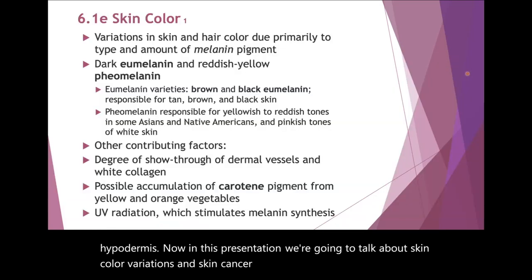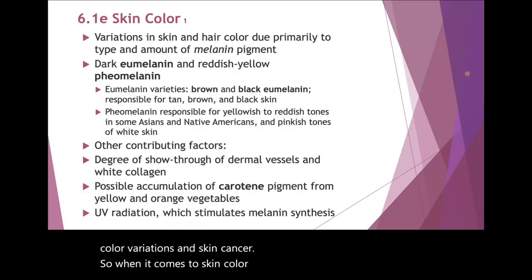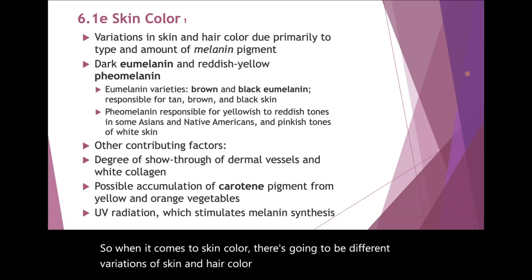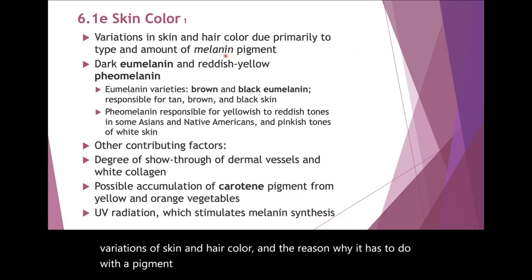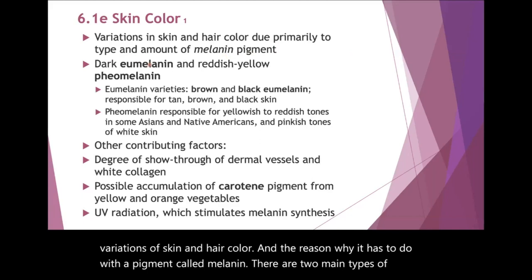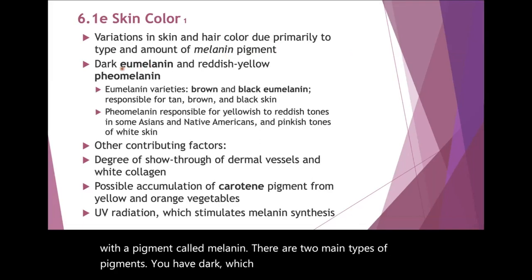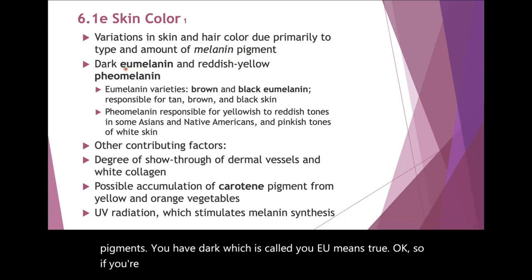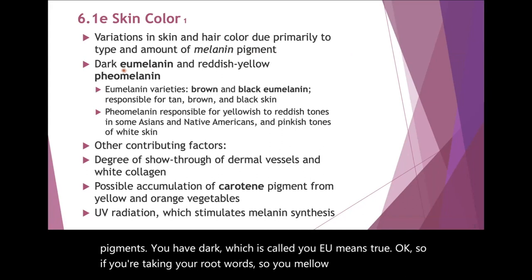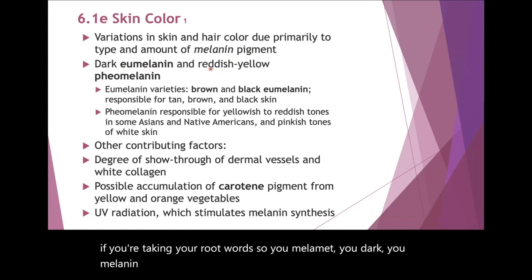When it comes to skin color, there are going to be different variations of skin and hair color, and the reason why has to do with a pigment called melanin. There are two main types of pigments. You have dark, which is called eumelanin — 'eu' means true. And a reddish yellow, which is pheomelanin.